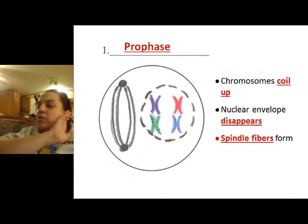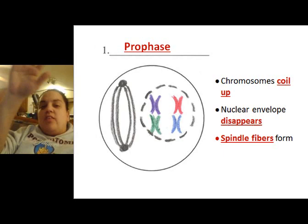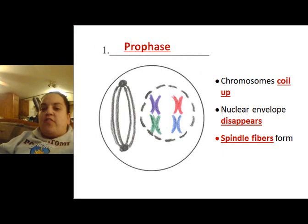Prophase — if you didn't get it fixed before, this is a good time. On the front of the flap, put down prophase. Behind that, write: chromosomes coil up, nuclear envelope disappears, spindle fibers form.